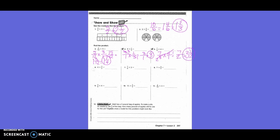Number six: write it as four over one times three-fifths. Can I simplify before I begin? No. Four times three is twelve, one times five is five, so the answer is twelve-fifths, which equals two and two-fifths. Number seven: written as seven-eighths times two over one. I can cross my two and my eight — common multiple is two. Two goes into two once, two goes into eight four times. Seven times one is seven, four times one is four. Seven-fourths equals one and three-fourths.